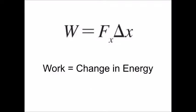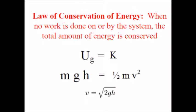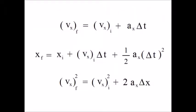Work is equal to change in energy, leading us to the law of conservation of energy. When there is no external work done on the system, the total amount of energy is conserved. For example, when a ball falls down, it converts gravitational potential energy — mgh — into kinetic energy — one-half mv squared. Mass cancels out from both sides, as Galileo told us, and the final velocity equals the square root of 2gh. This is the third kinematic equation; if you square both sides, VF squared equals 2AD.